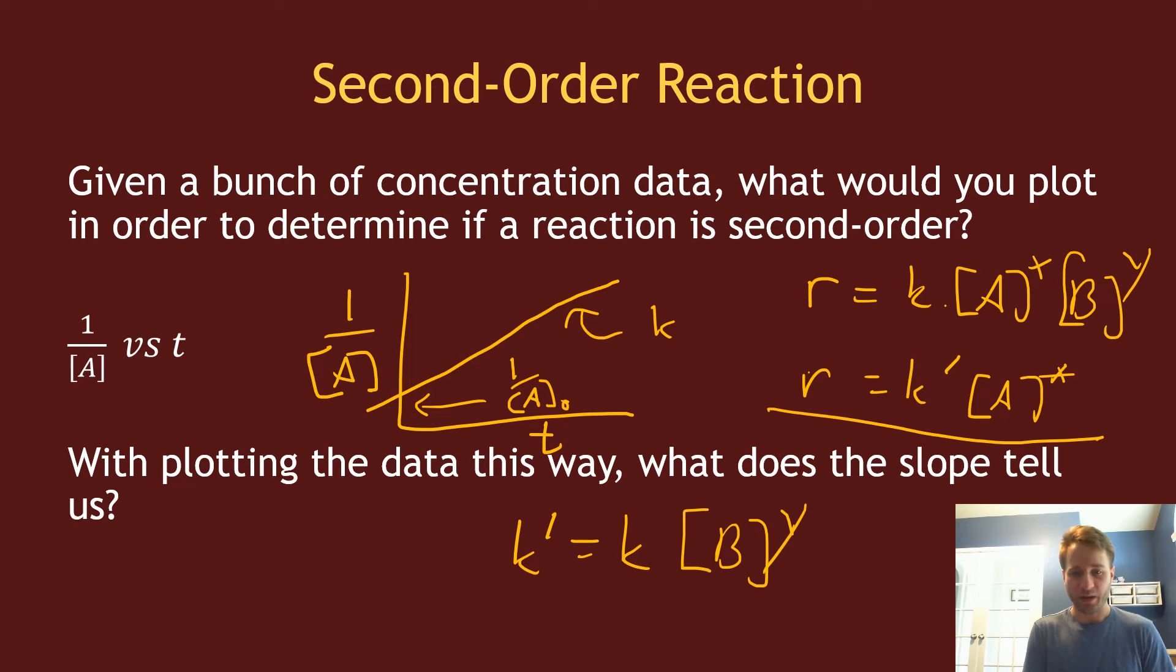You could back out that once you figure out what the power of B is. You can back out the rate constant because then you would do excess amounts of A and then measure the rate of the reaction with respect to B. Once you do that, you can back out that rate constant.